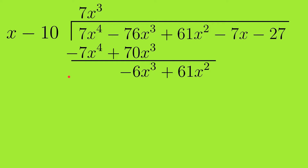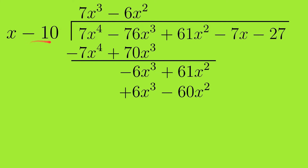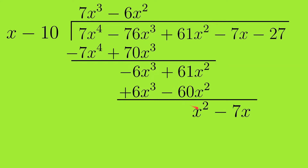We compare x and minus 6x³: x times minus 6x² equals minus 6x³, so we write minus 6x² in the quotient. We multiply x minus 10 by minus 6x², giving minus 6x³ plus 60x². Switching signs gives plus 6x³ minus 60x². After subtracting, we get x², and minus 7x comes down, leaving x² minus 7x.